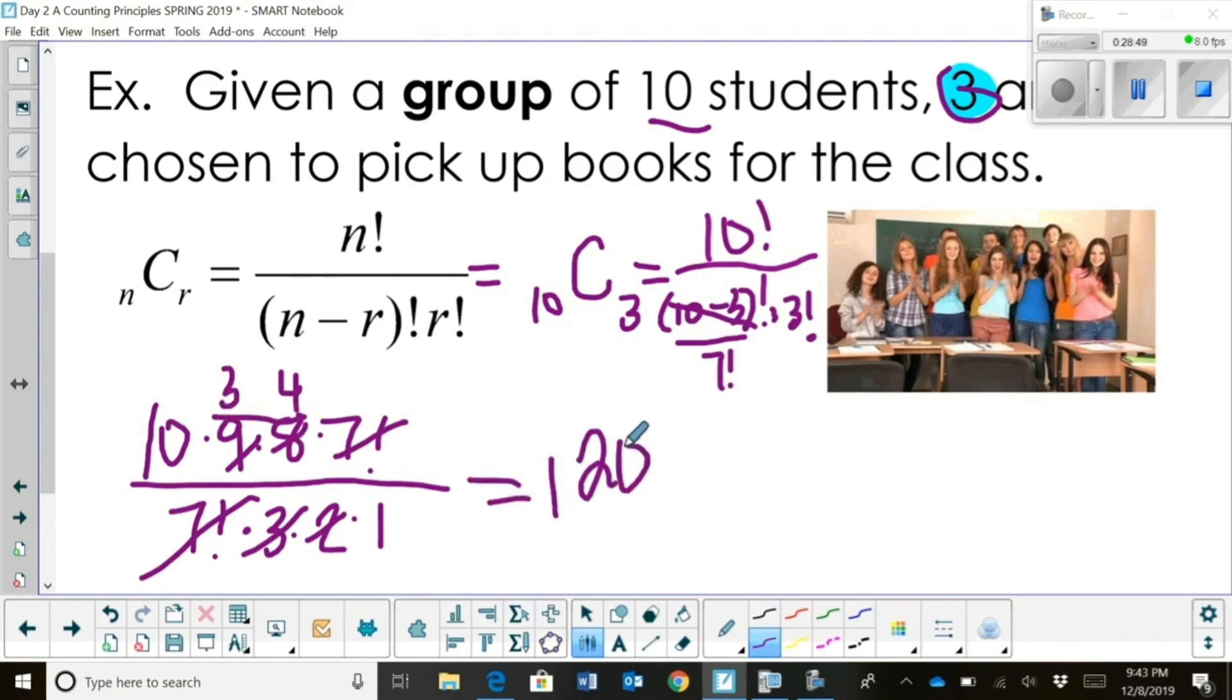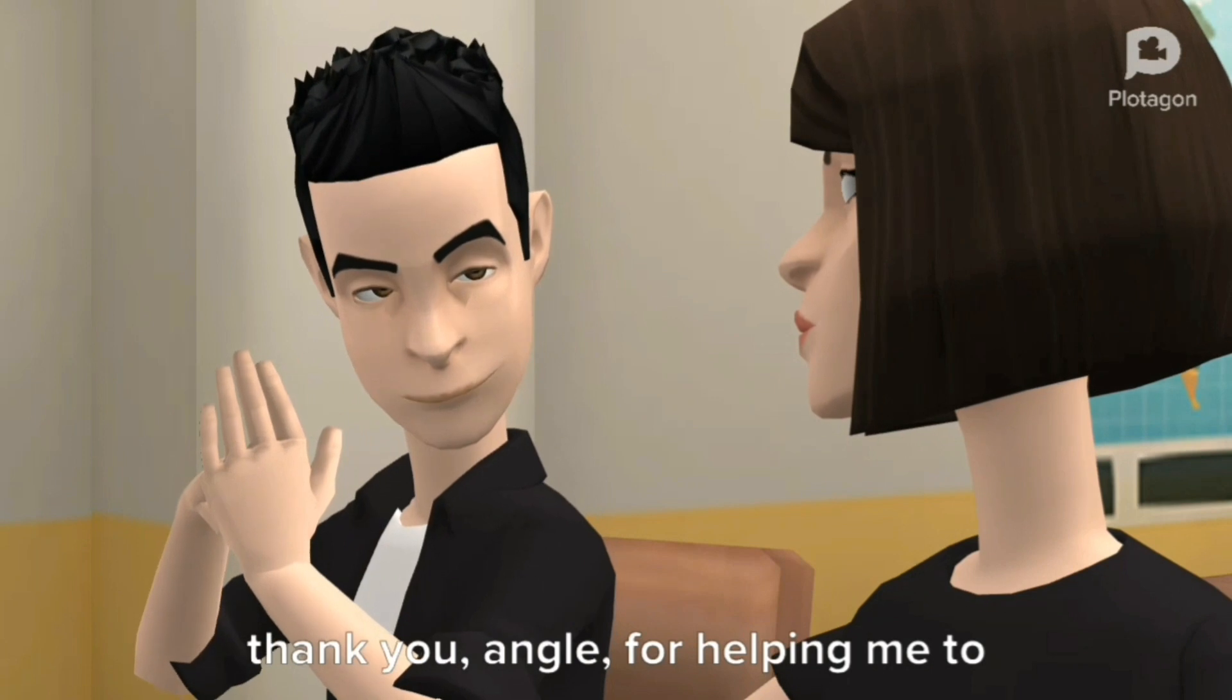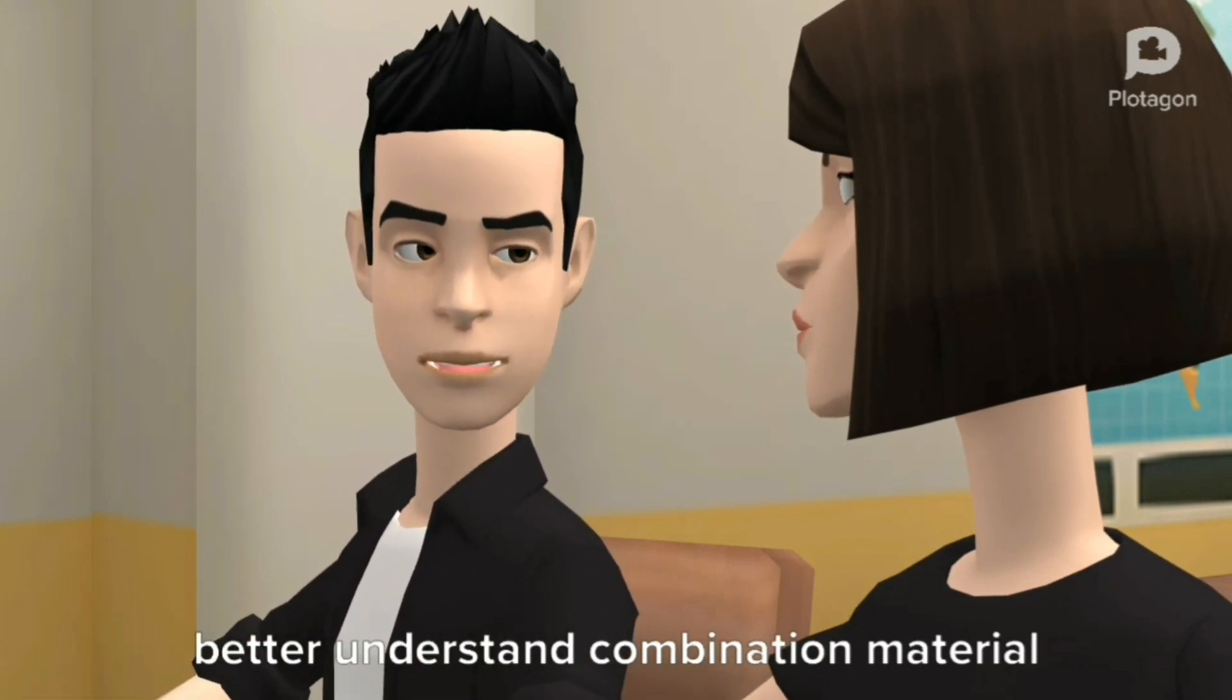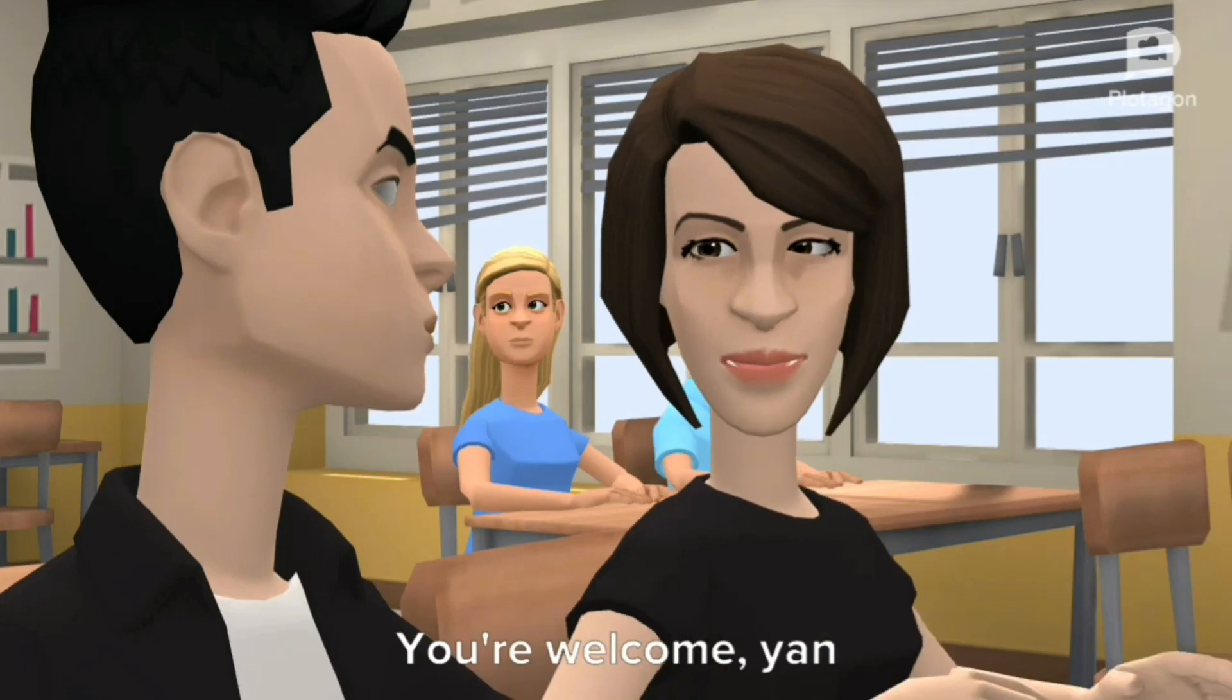So, that means there are 120 different ways I can choose three students to go get books from a group of ten students. That's how a combination works. Thank you, Angle, for helping me to better understand combination material. You're welcome, Yan.